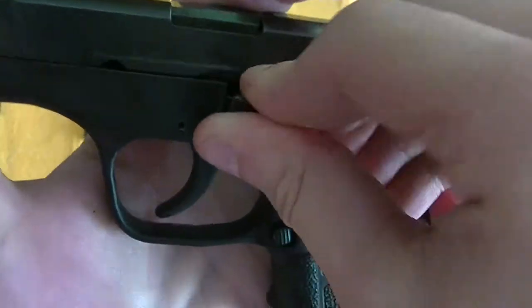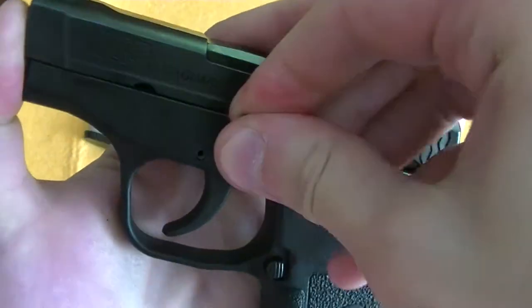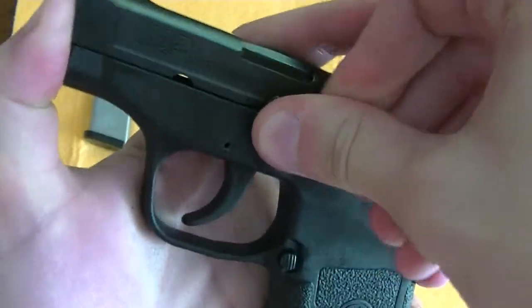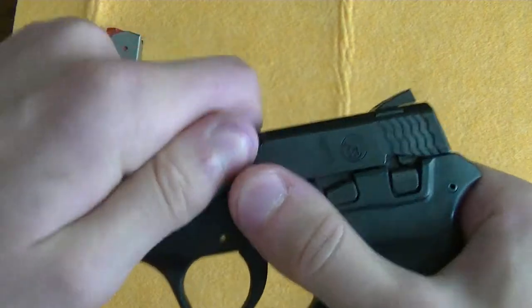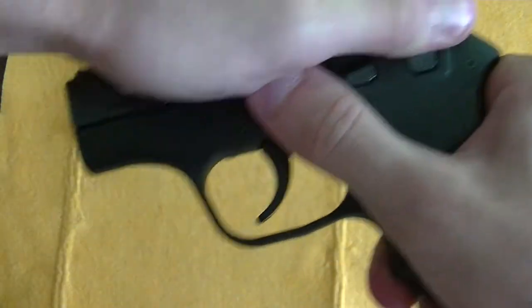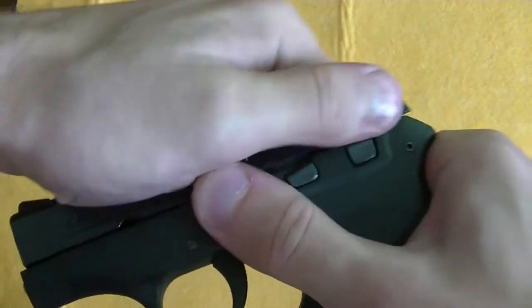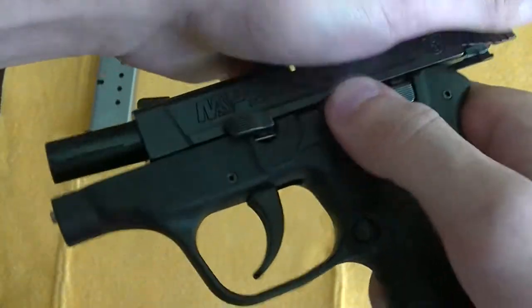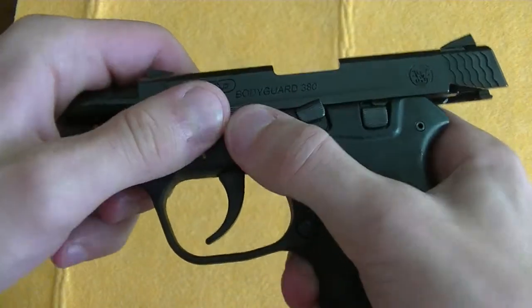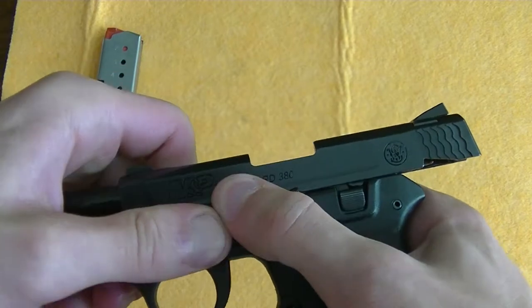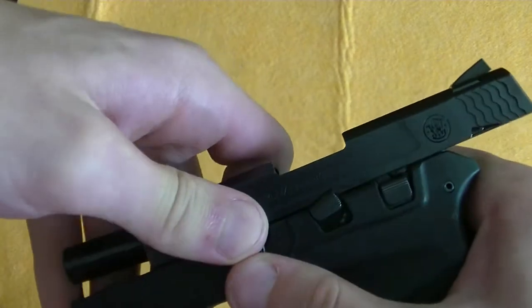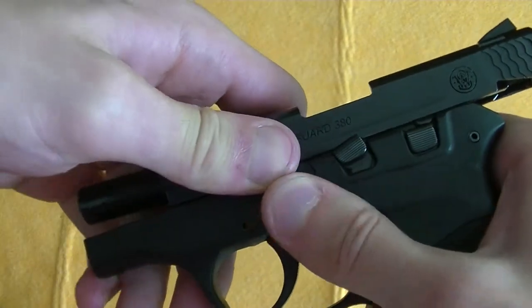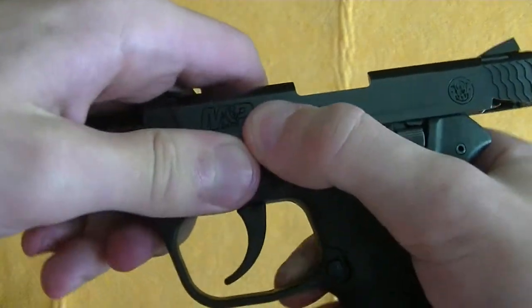You have to move the spring down and then shove it in partially. And then as you lock the slide back, you can maneuver it back into place.